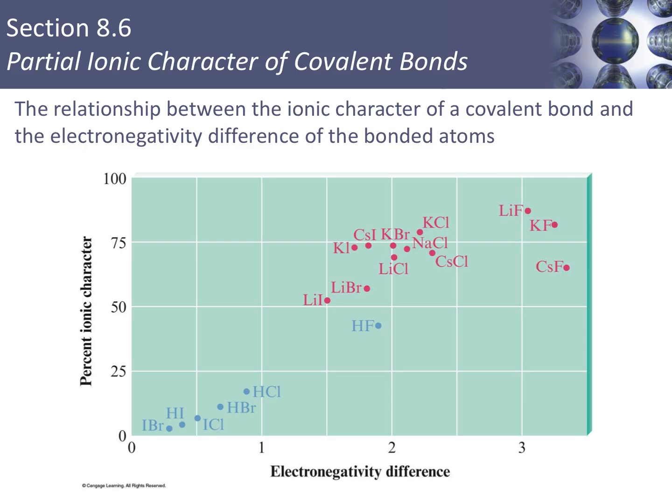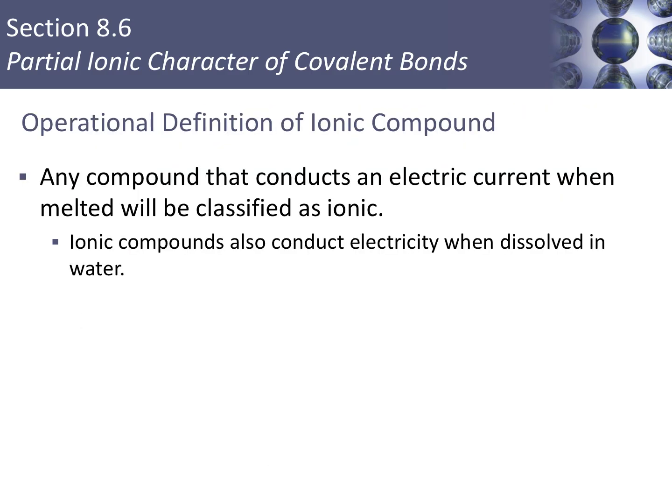Notice that no compound is at 100% ionic character. We can continue to use the idea that a metal/non-metal combination is an ionic compound, and a non-metal/non-metal combination is a compound that is covalently bonded.